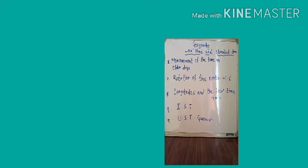Indian Standard Time: The Indian Standard Time has been decided with reference to the 82 degrees 30 minutes east longitude. The difference between the local time at 82°30' east longitude and the local time at the extreme west and east longitude passing through India is not more than one hour.